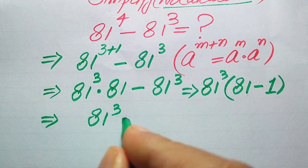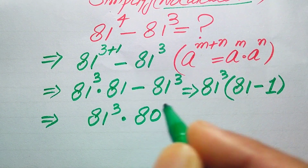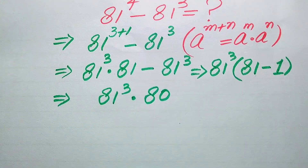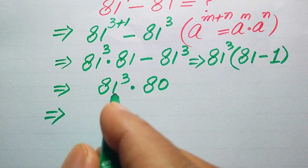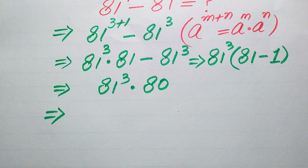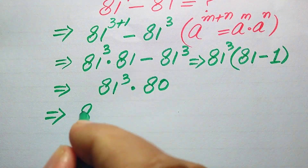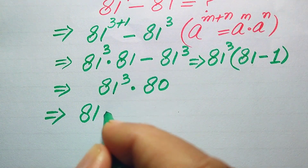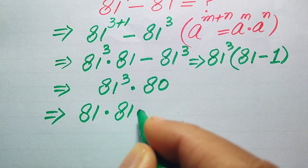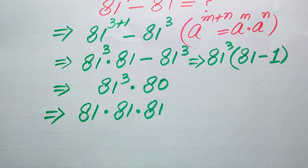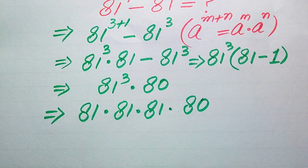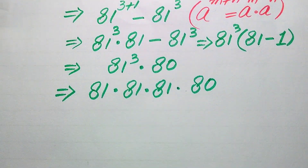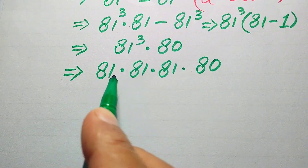After subtraction, 81 minus 1 becomes 80, so the expression simplifies to 81 cubed multiplied by 80. In the next step we need to find the cube of 81, meaning we multiply 81 by itself 3 times, and then multiply that result by 80.